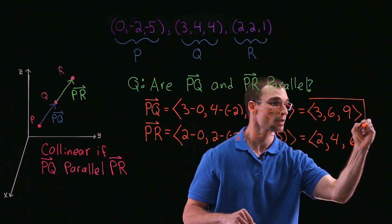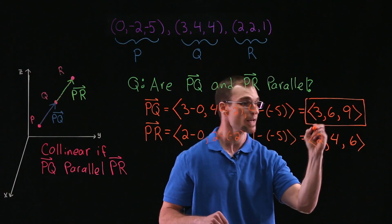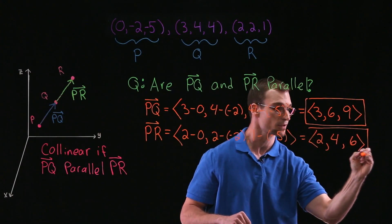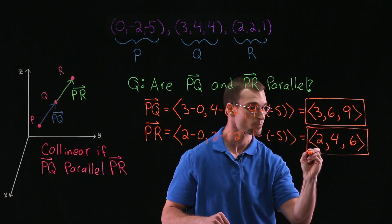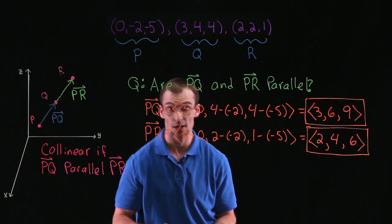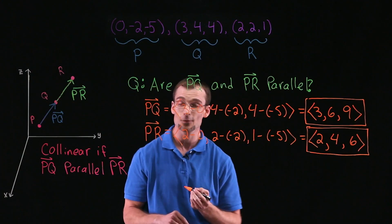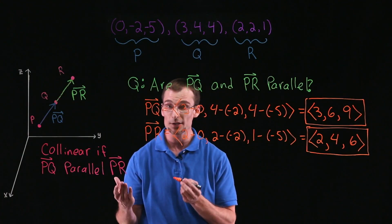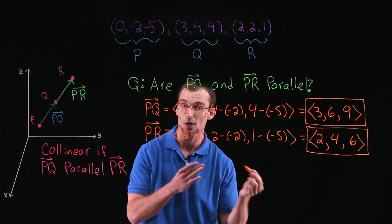So here's our two vectors. And again, what we want to do is see if these things are parallel. So what does it mean for two vectors to be parallel? Well, it means for vectors to be parallel if one vector can be written as a scalar multiple of the other.